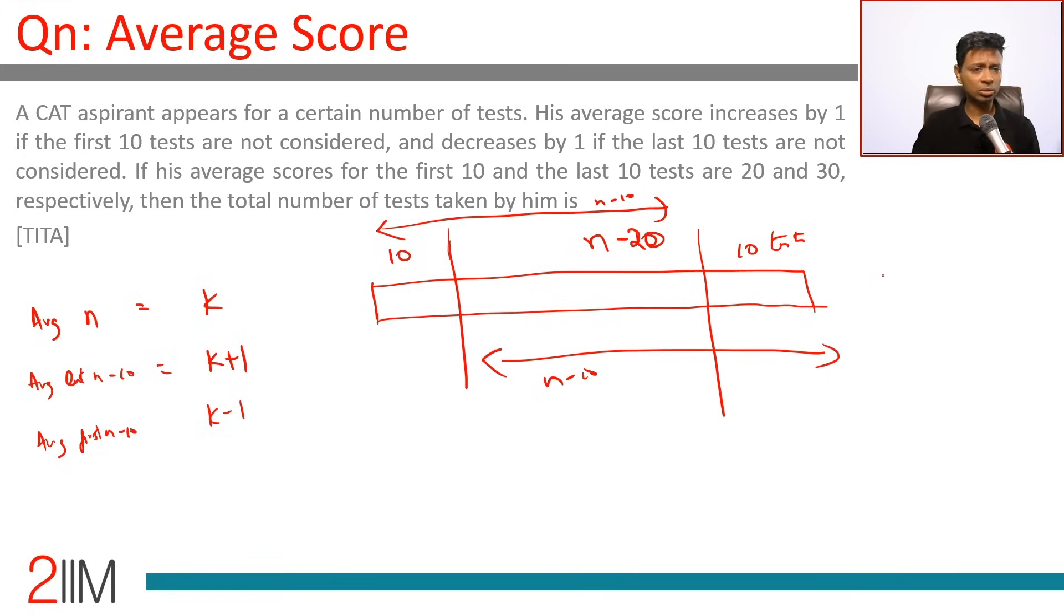So this is as intuitively as possible, average scores for the first 10 and the last 10 tests are 20 and 30. Average of this 10 is 20, average of this 10 is 30.